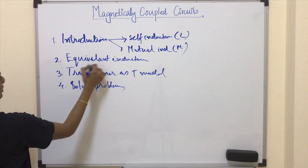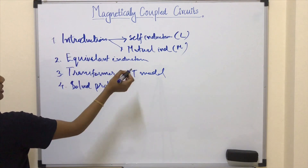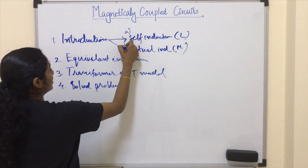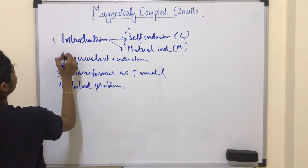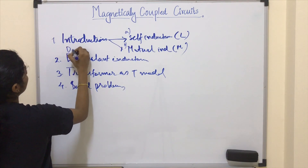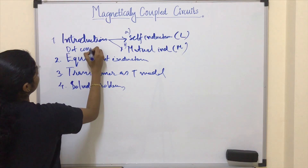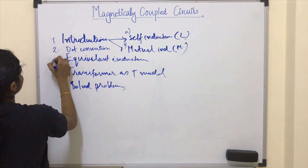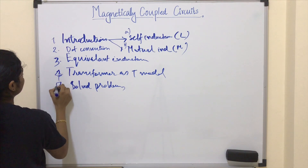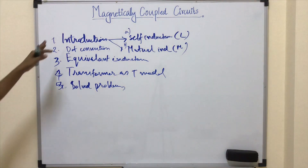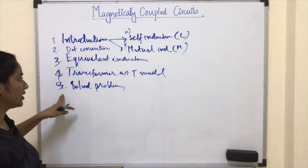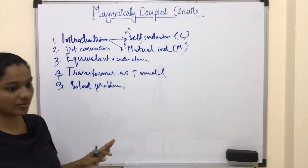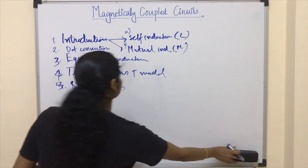Prior to equivalent inductance, we will cover one small section on dot convention. So through these five sections we will cover magnetically coupled circuits completely.